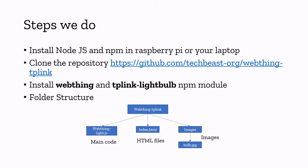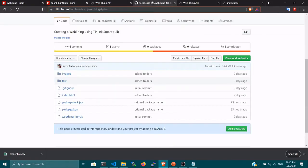The folder structure looks like this: the main folder is web-thing-tplink. The main code resides inside web-thing-tplink-light.js where you can find all the source code. index.html is a simple HTML page I built to control the application — if you're good at front-end development you can use any front-end framework. There's also an images folder where I've uploaded an image of the LB100 smart bulb.